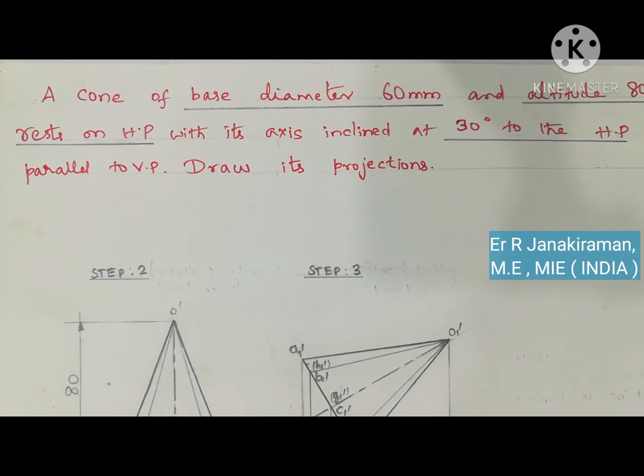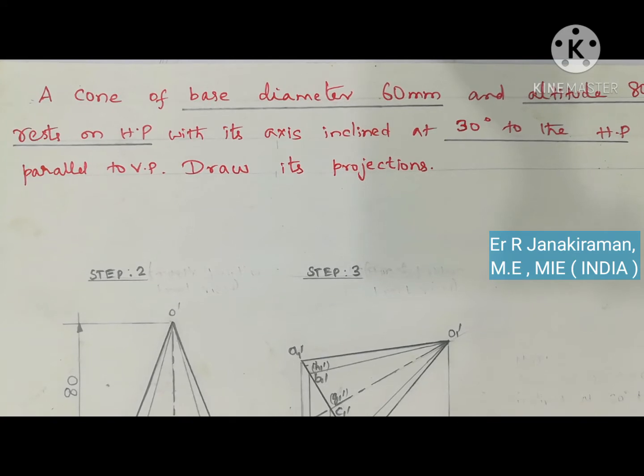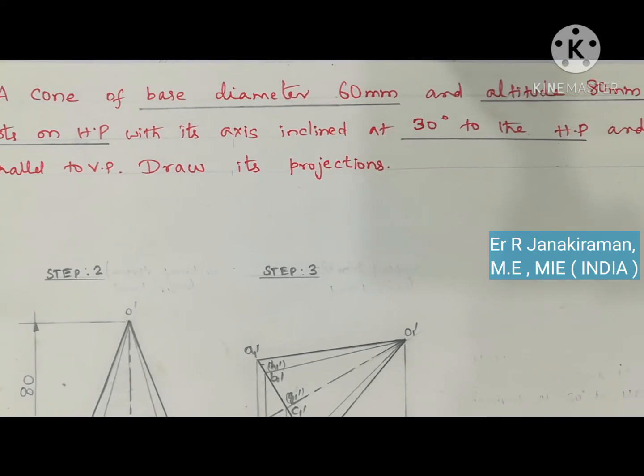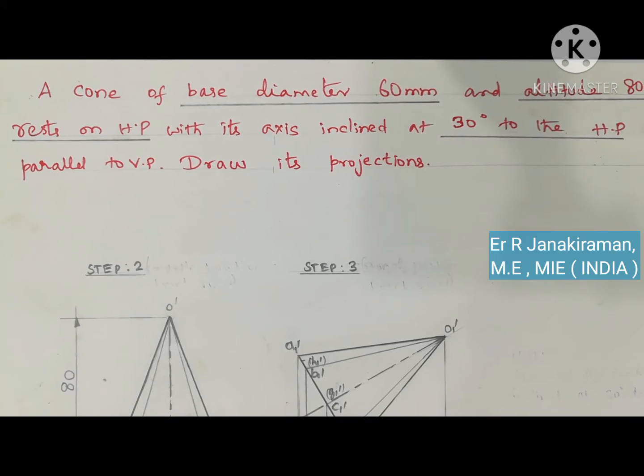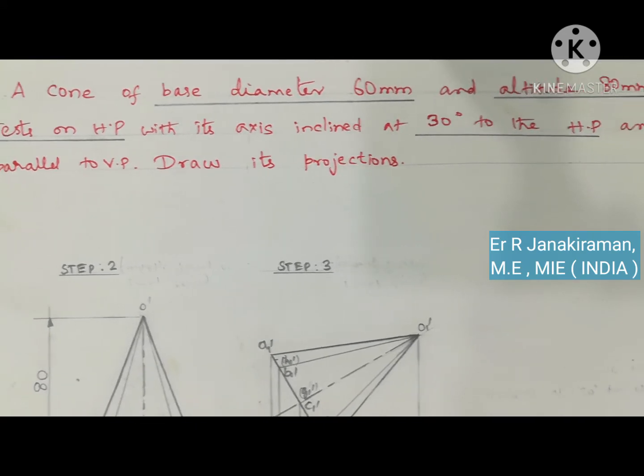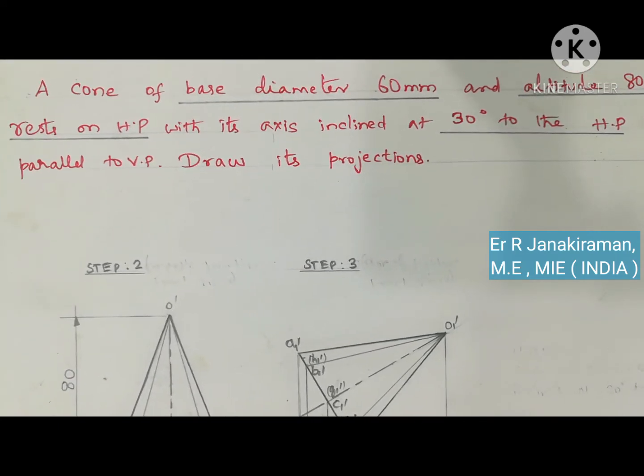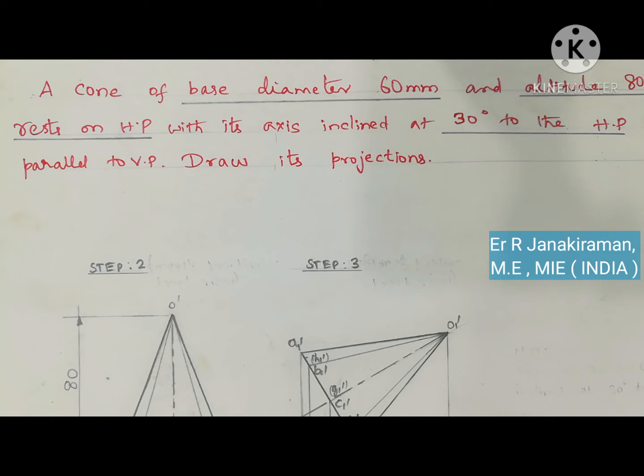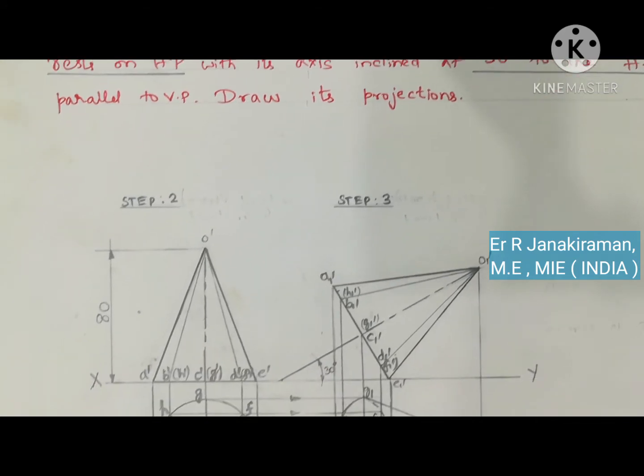A cone of base diameter 60 mm and altitude, altitude means height of the cone, is 80 mm. Rest on HP with its axis inclined at 30 degree to the HP and parallel to the VP. Draw its projections. That we are going to concentrate. So this is about cone.